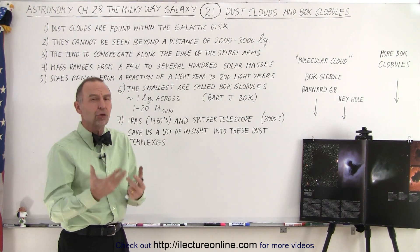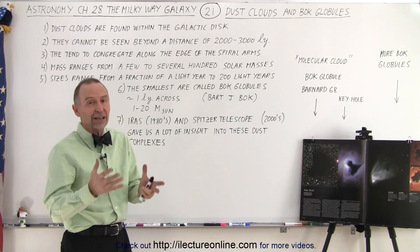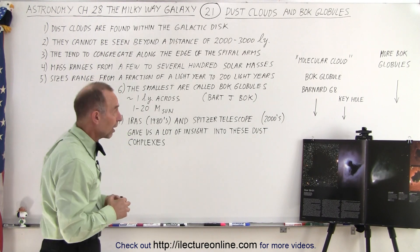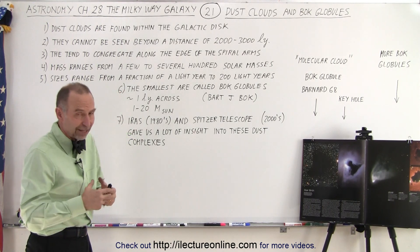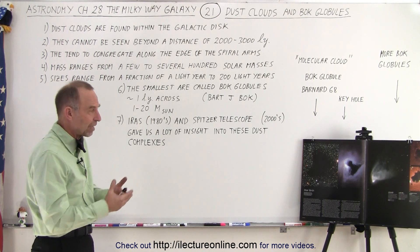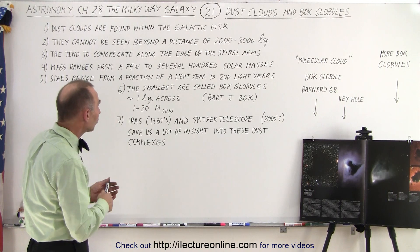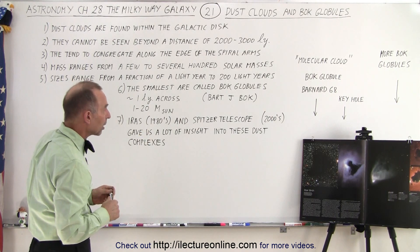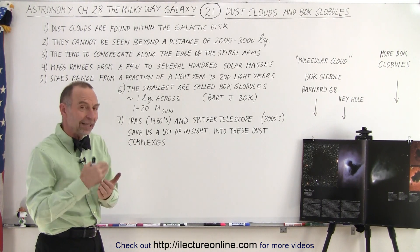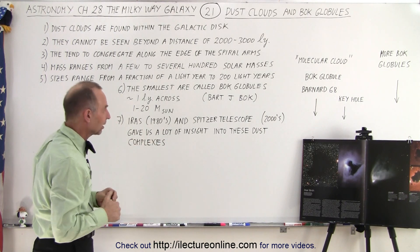They tend to be fairly dense, with masses anywhere from a few solar masses to potentially several hundred solar masses. Their size is usually less than a light year across, up to as much as 100 or 200 light years across. Generally, they're just 10 or 20 solar masses over a range of about 1 to 3 light years. The smallest are called the Bok globules — these small dense blobs of darkness, usually lit up from behind by something very bright.